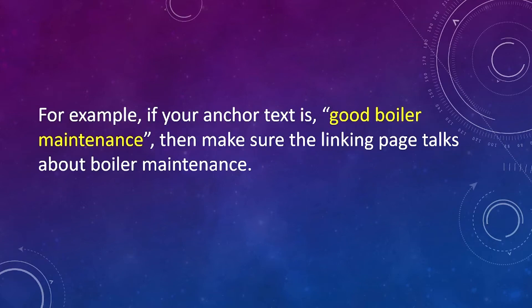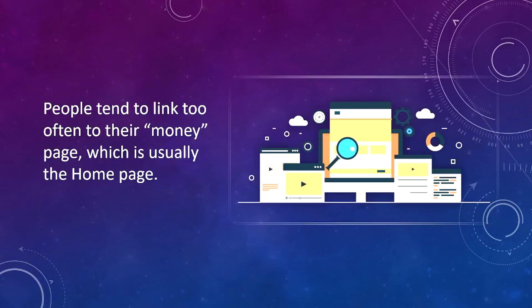For example, if your anchor text is 'good boiler maintenance,' then make sure the linking page talks about boiler maintenance. People tend to link too often to their money page, which is usually the home page. This page will probably have a lot of internal links already.